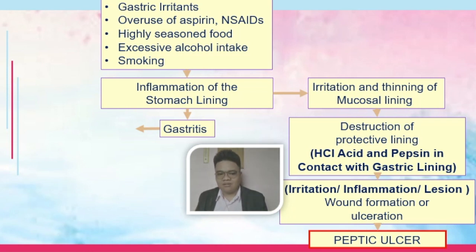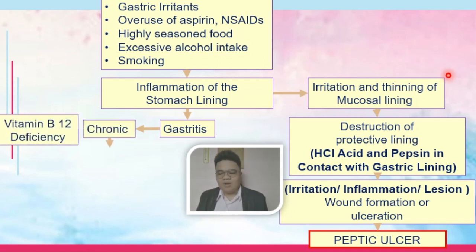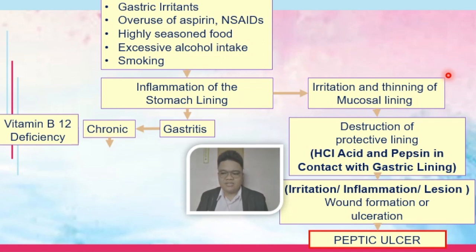Hence, one common sequela is peptic ulcer disease. Gastritis could be sudden — referring to acute gastritis — or gradual, referring to chronic gastritis. If it's chronic, one problem is deficiency in the production of intrinsic factor, and as a secondary problem, this leads to vitamin B12 deficiency. Hence, our patient would need vitamin B12 supplements if they have chronic gastritis.